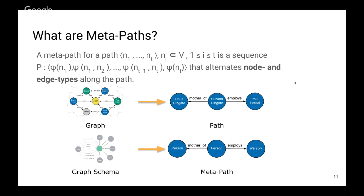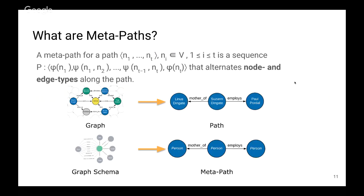More specifically, we can compute meta paths — alternating sequences of node and edge labels. For example, if we have a path where Linus Dingate's mother is Susan Dingate and she employs Paul Portal, the resulting meta path would be: a person is a mother of a person who employs a person. We can extract this from the graph schema. These meta paths are basically a concise representation of the content which is in the graph.